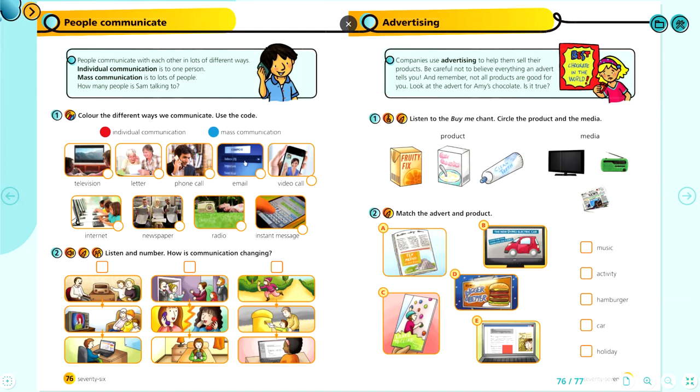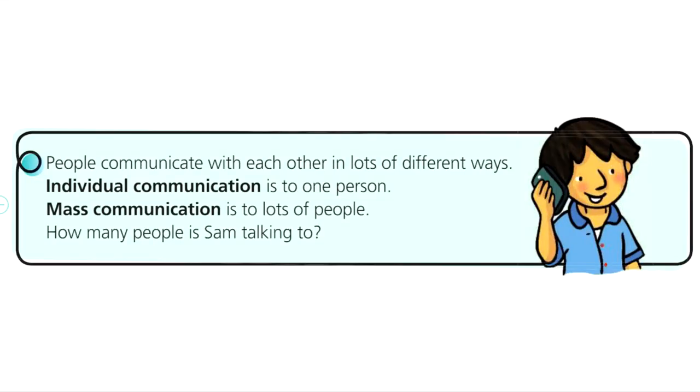People communicate. Unit 5, page 76. Listen, read and say. People communicate with each other in lots of different ways. Individual communication is to one person. Mass communication is to lots of people. How many people is Sam talking to?